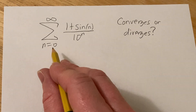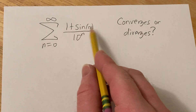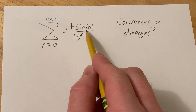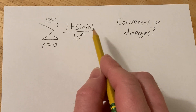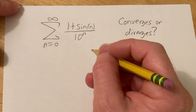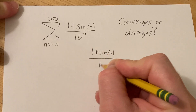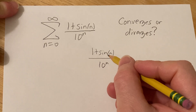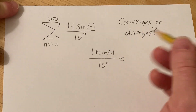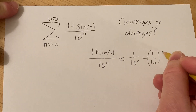In this video we have an infinite series and we have to determine if it converges or diverges. When you look at something like this you notice the 10 to the n, and that makes you think of a geometric series. If it was 1 over 10 to the n it would be geometric. So the intuition is: if you have (1 plus sine of n) over 10 to the n, since sine is between negative 1 and 1, this is approximately like 1 over 10 to the n.